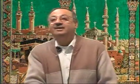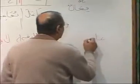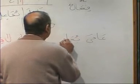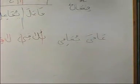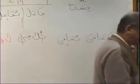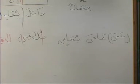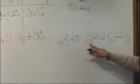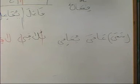Wa alamatu jarrihi — Al-ya'u li'anahu minal asma'ul khamsa. Wa huwa mudafil. And al-mariid is the na'at. Where is the man'oot? Akhi. Afahullahu — Afah yu'afi. What is the meaning of Afah, brothers and sisters? Same meaning as Shafah — may Allah cure him. See how the alif maksura is formed — the long alif.